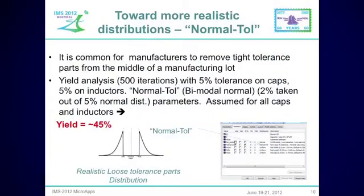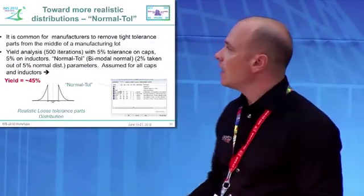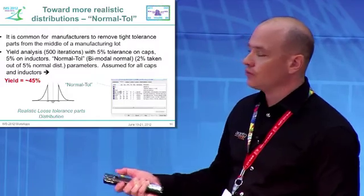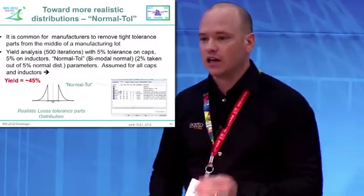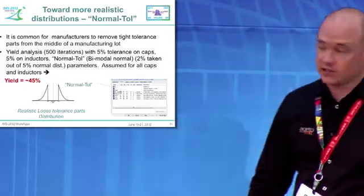To get closer to reality, we use a more realistic distribution: a normal distribution where the middle high-tolerance region is clipped away. We ran the same yield analysis for a thousand cycles for statistical stability and found the yield drops to 45% — 9% less yield due to using a more realistic distribution.